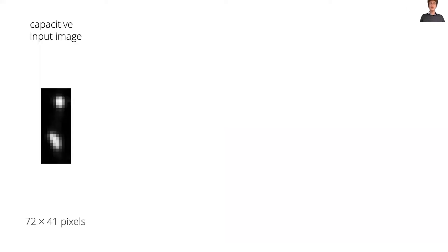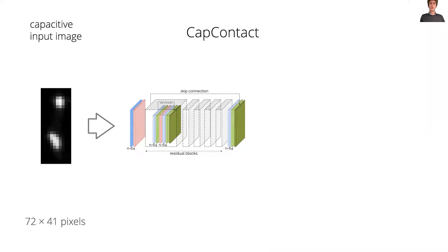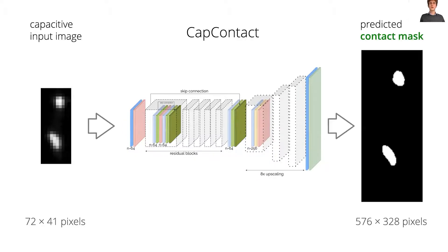CapContact implements a generative adversarial network that comprises a convolutional neural network with five residual blocks. These blocks are connected to three consecutive subpixel convolutional layers that upsample the image with a factor of eight. Due to the fully convolutional architecture, we can feed capacitive frames of any size into CapContact.